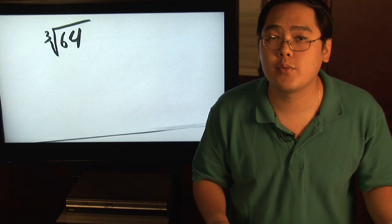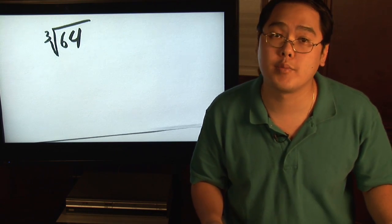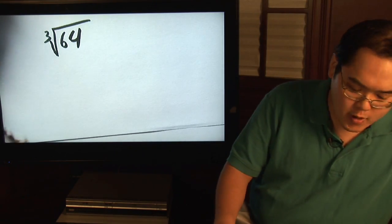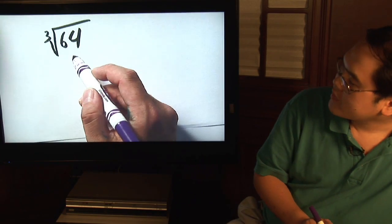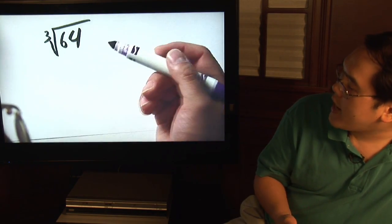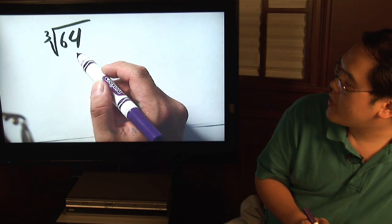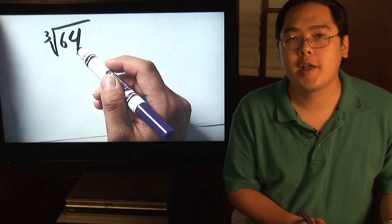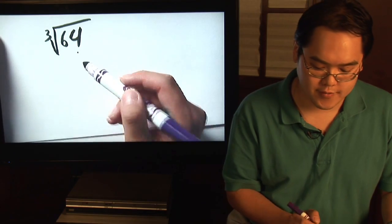We're going to do one involving numbers and we're going to do another example involving variables. So here we go. Suppose you wanted to find out the cube root of 64. Basically what you want to ask yourself is, what number multiplied by itself three times is going to give you 64?